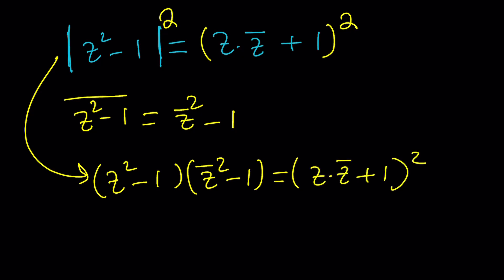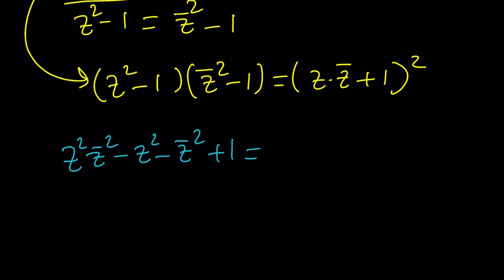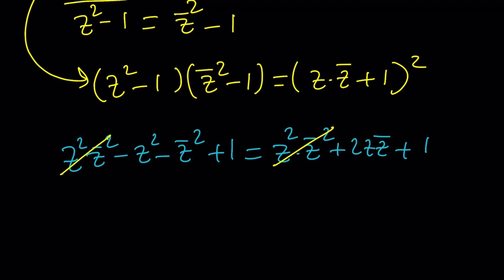So our equation becomes: (z² − 1)(z̄² − 1) equals (z·z̄ + 1) squared. Let's distribute everything on the left-hand side. We get z²z̄² minus z² minus z̄² plus 1, and on the right-hand side we have z²z̄² plus 2z·z̄ plus 1.